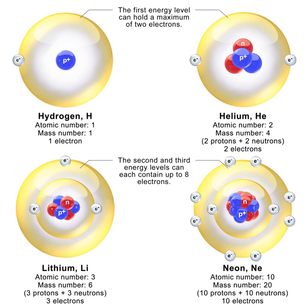Ultracold neutrons are produced by elastically scattering cold neutrons in substances with a temperature of a few kelvins, such as solid deuterium or superfluid helium. An alternative production method is the mechanical deceleration of cold neutrons.